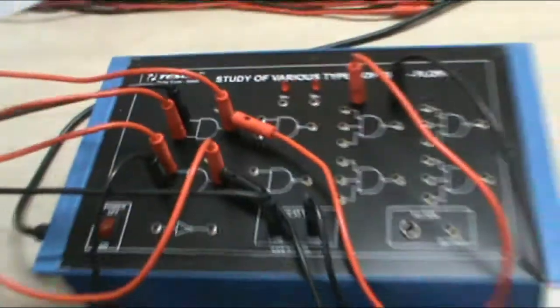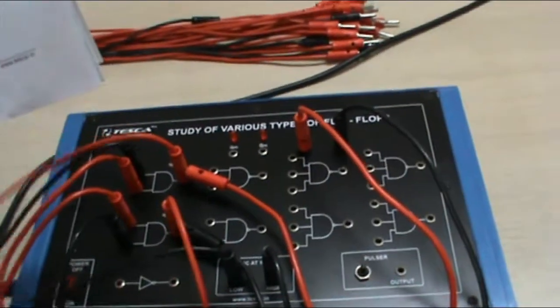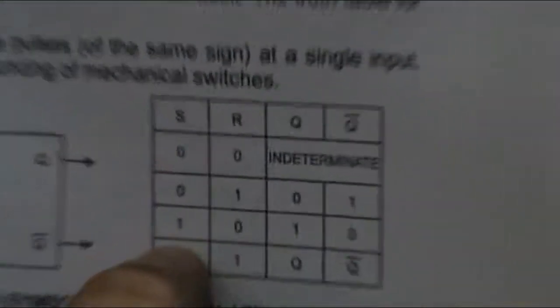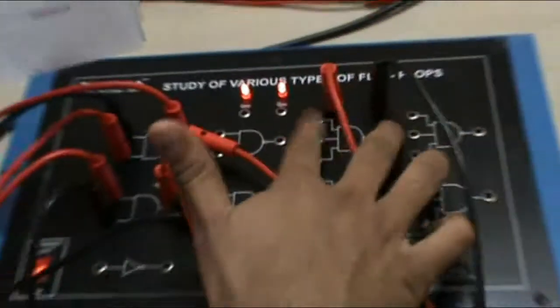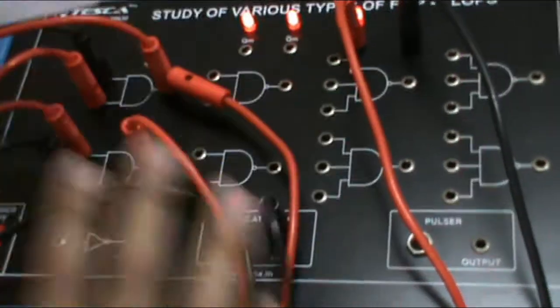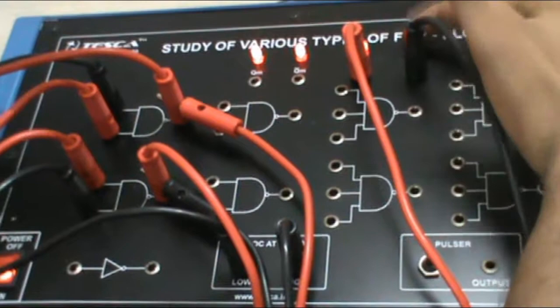First I have given low to S and high to R. My output should be 1, 0. You can see my output is 1, 0. These two LEDs will glow without any input — these are just the display LEDs. My output Q and Q-bar is 1, 0.